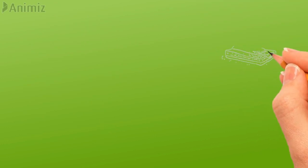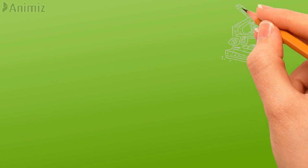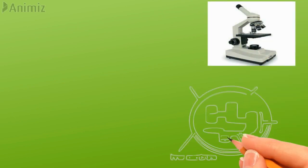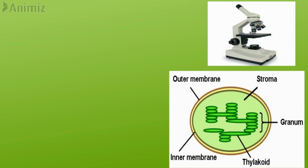Chloroplasts vary in shape and size, with a diameter of about 4 to 6 micrometers. Under the light microscope, they appear to be heterogeneous structures with small granules known as grana embedded in the matrix. Under the electron microscope, a chloroplast shows three main components: the envelope, the stroma, and the thylakoid.